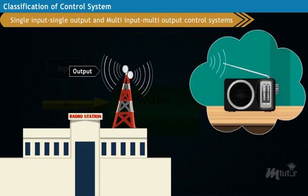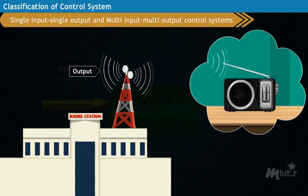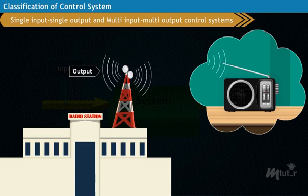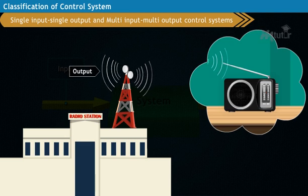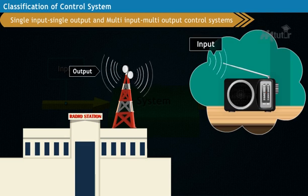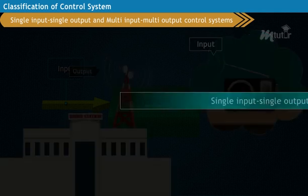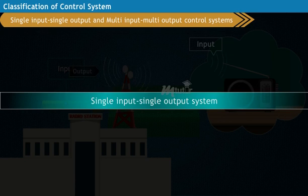Here, the radio system employs only one antenna at the radio station to transmit the signal, and the device, radio, uses a single antenna to receive the signals. Hence, the radio system is a single-input single-output system.